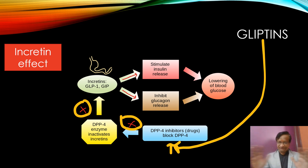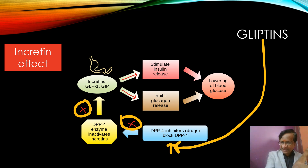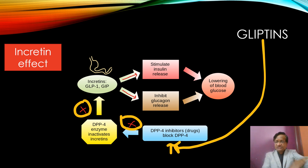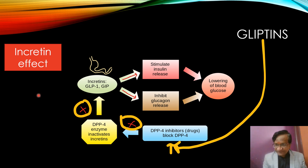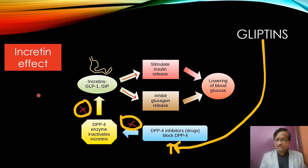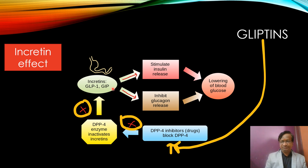Before that, let me explain the incretin effect. If we give oral glucose to patient A and IV glucose to patient B, both achieving the same blood sugar of 200, the insulin secretion is higher in patient A who received oral glucose. This higher insulin secretion triggered by oral intake is called the incretin effect. Incretins are GLP-1 and GIP; they stimulate insulin and inhibit glucagon release.